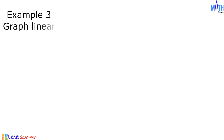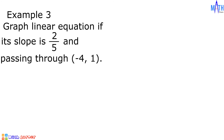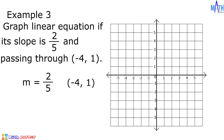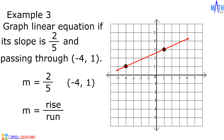Example number 3, let us graph a linear equation if its slope is 2/5 and it passes through the point (-4, 1). Let us plot (-4, 1) in the Cartesian plane: from the origin, move 4 units to the left and 1 unit upward. Since slope equals rise over run, where rise is the change in y and run is the change in x, from (-4, 1) we move 2 units upward and 5 units to the right to get another point. Drawing a line through these two points gives the graph.